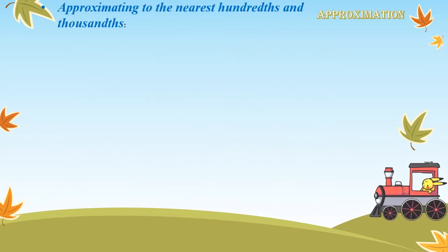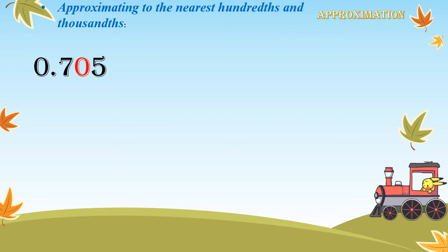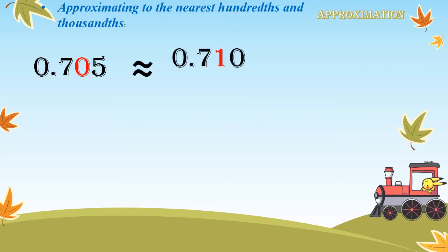Let's have some examples on how to approximate to the nearest hundredth and thousandth. First question: approximate 705,000 to the nearest hundred. Find your number — where is the digit in the hundreds place? It's a zero, so underline it. Look right next door — it's a 5 in the thousands place. Five is five or more, so add 1 to zero — it becomes 1. Replace 5 with zero. The answer will be 710,000.